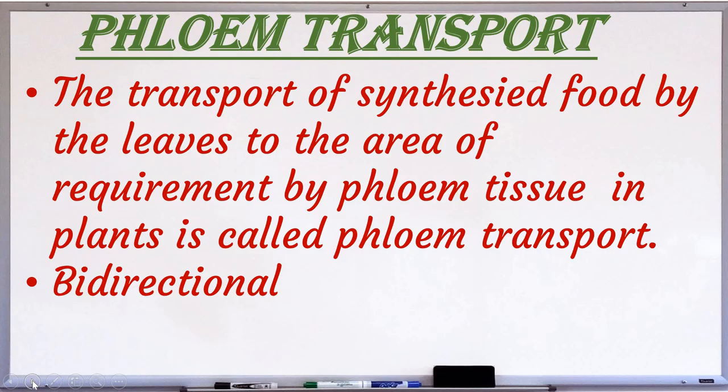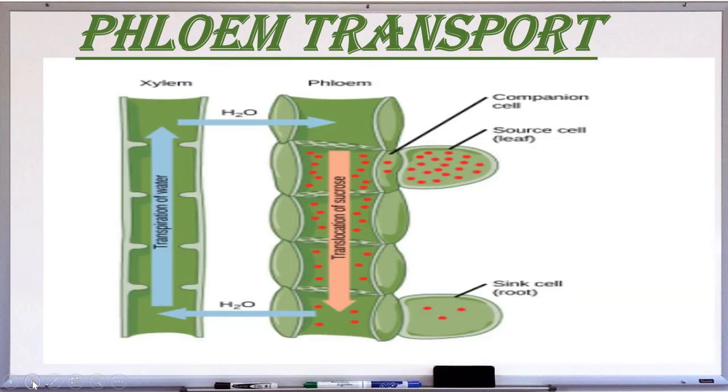The transportation of organic solutes from one part of the plant to the other through phloem sieve tubes is called translocation of organic solutes. The mechanism of translocation of sugars is by pressure flow hypothesis.